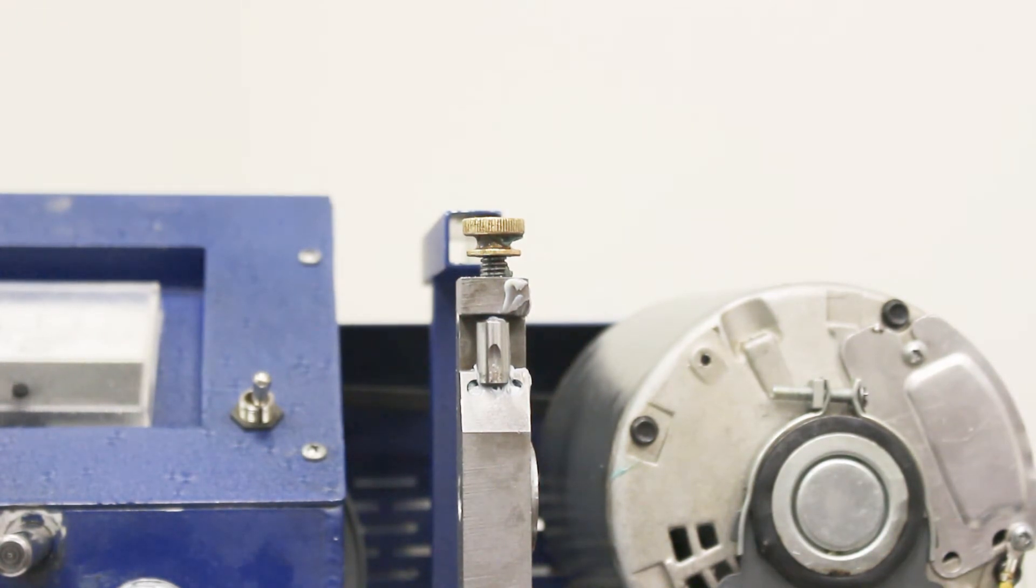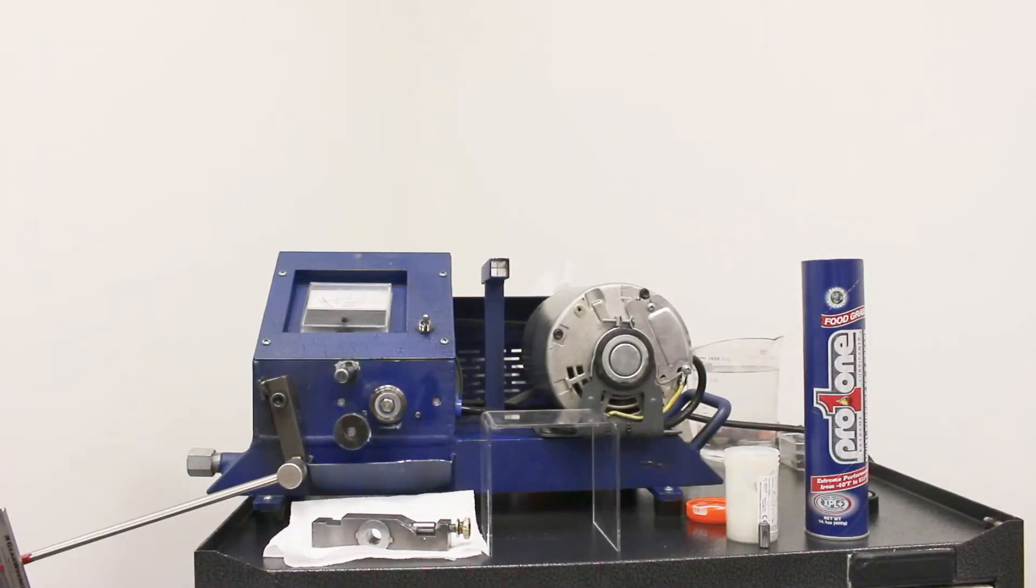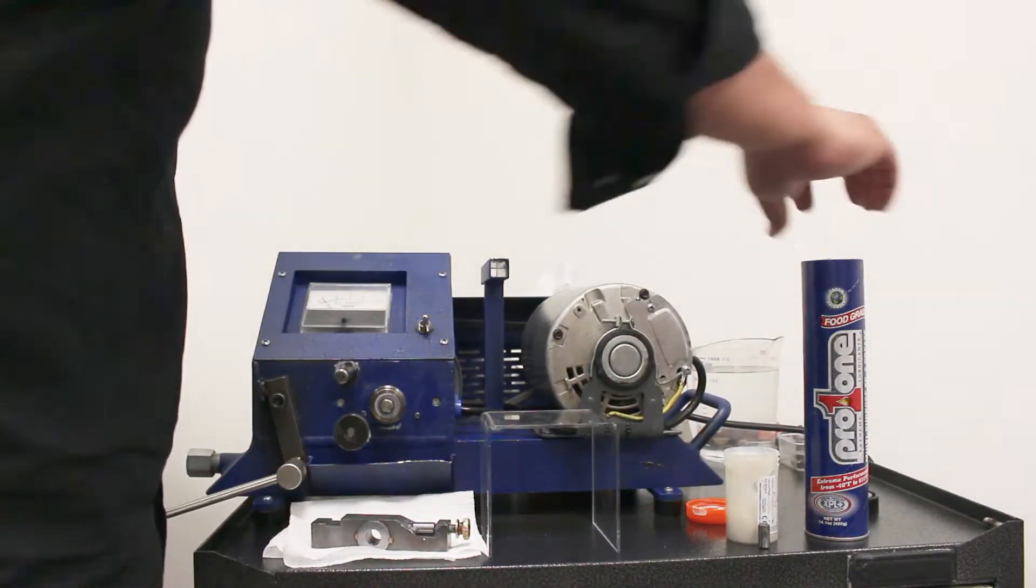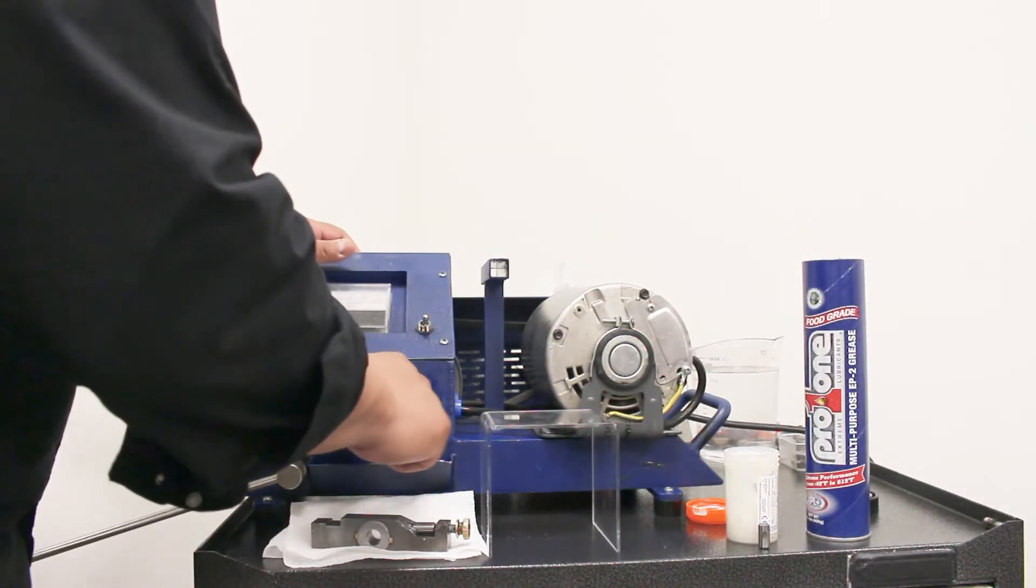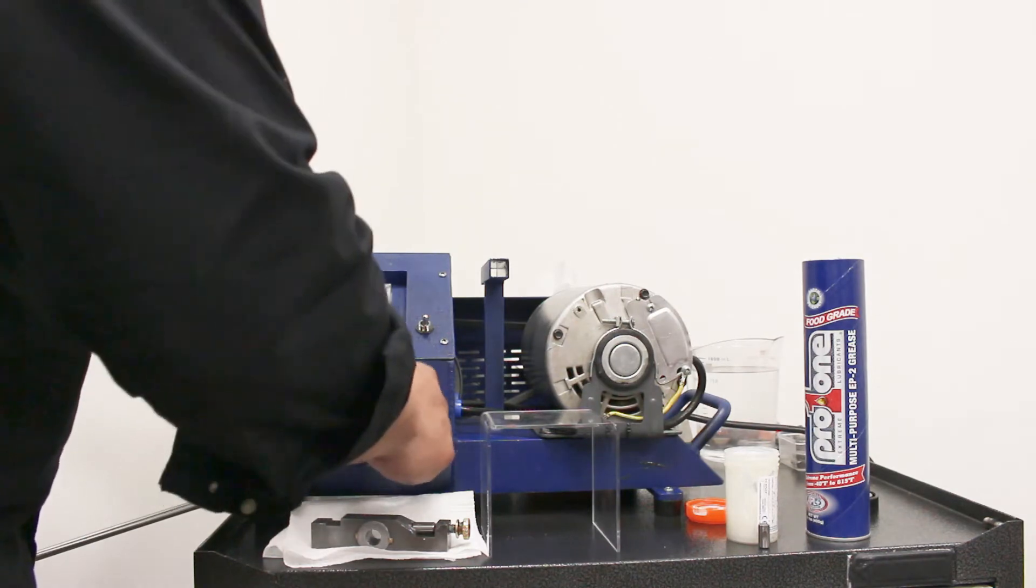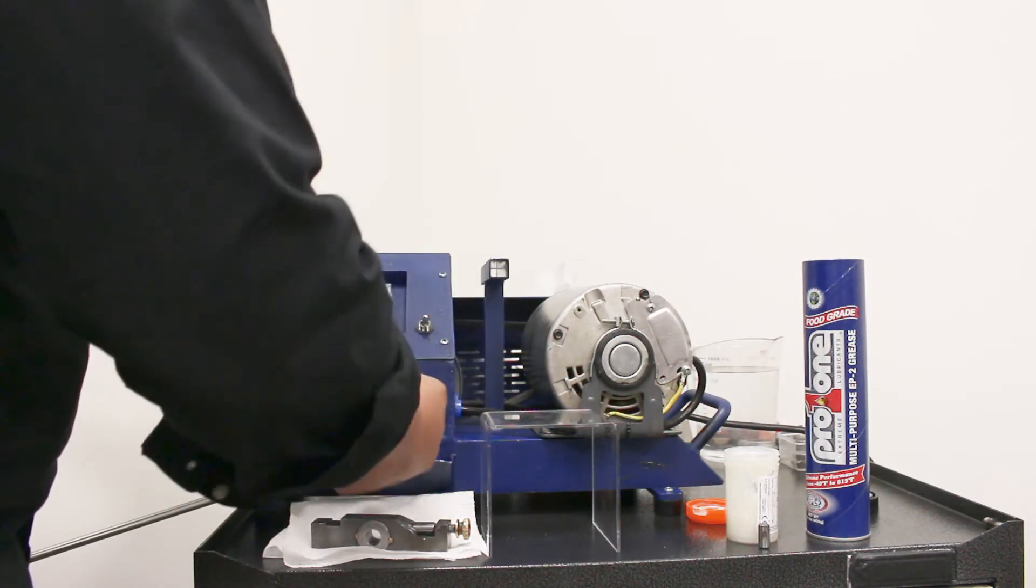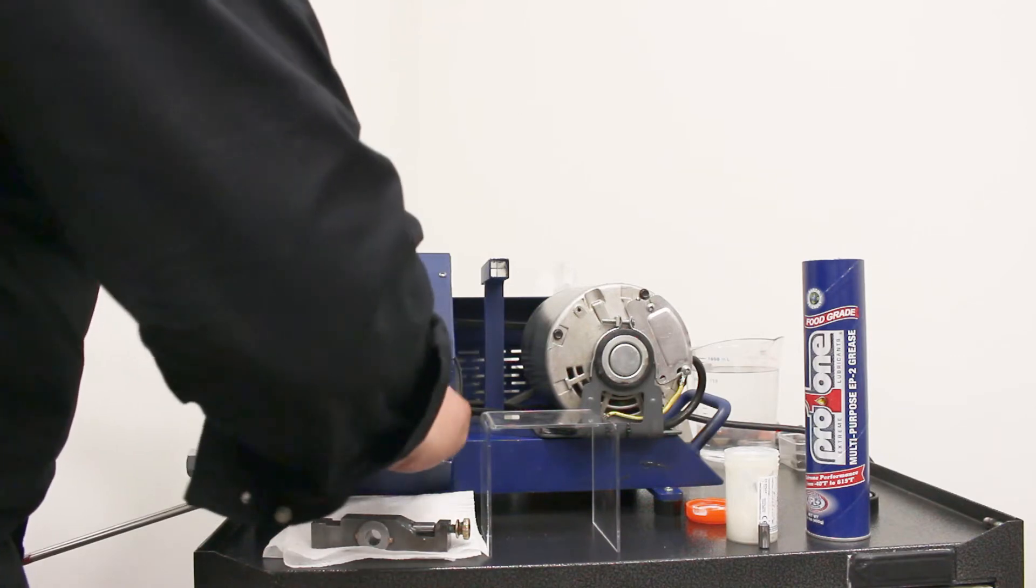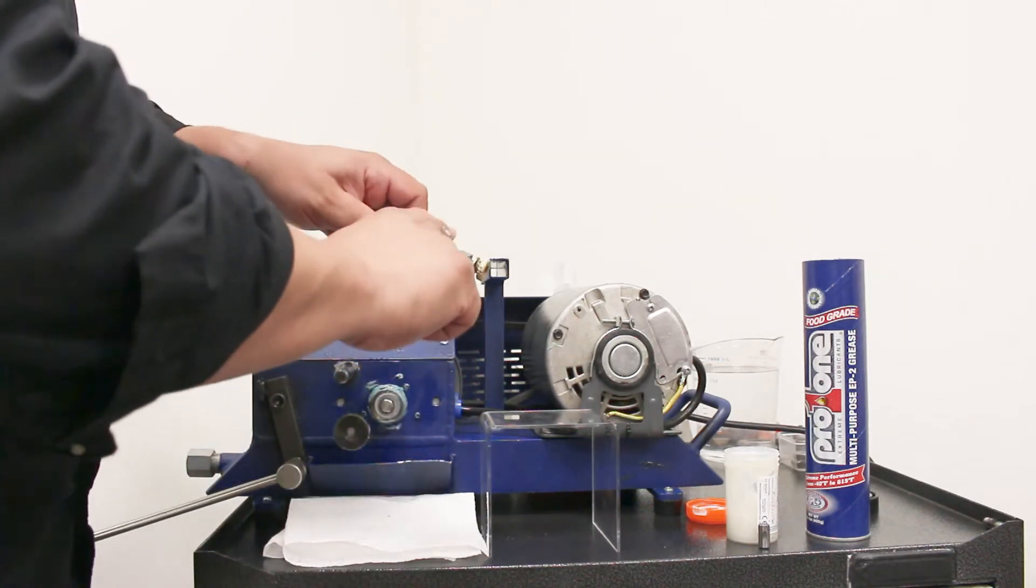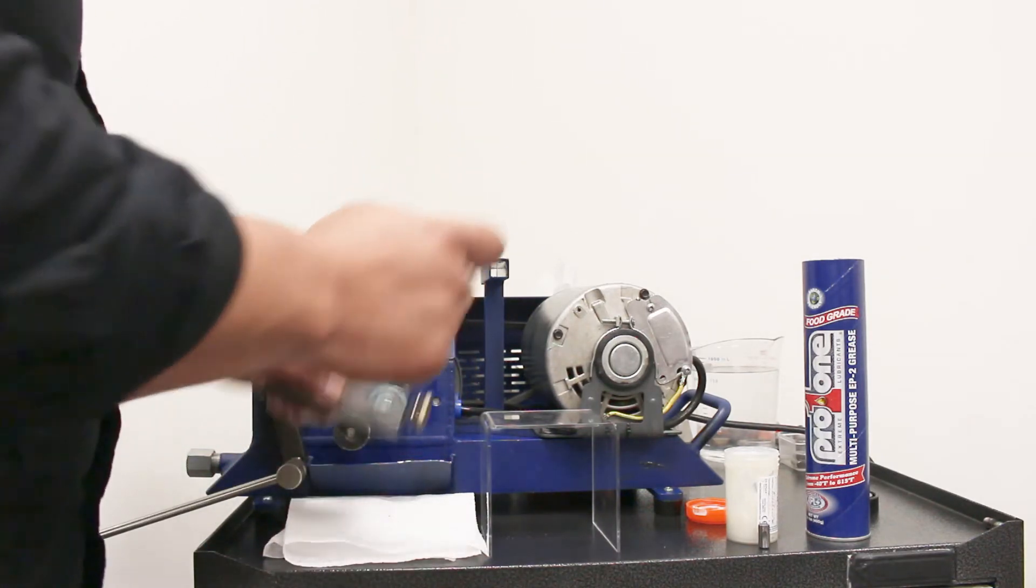Now we will go ahead and test the Pro 1 EP2 grease. Okay, the machine has been reset and we will now test the Pro 1 EP2 grease. So I will take an amount of the grease, which is an NLGI grade 2 type grease. And I will also apply some to the bearing or dowel pin.